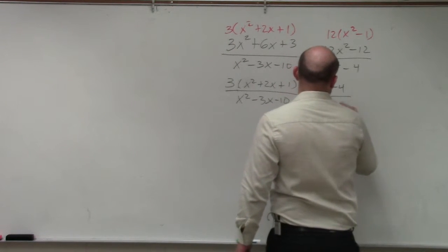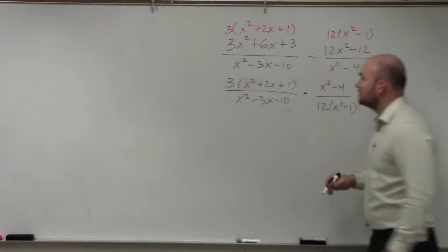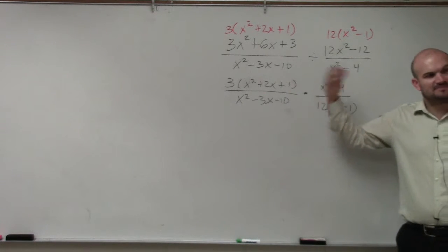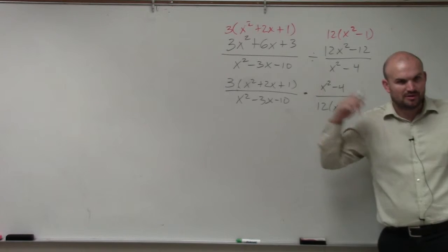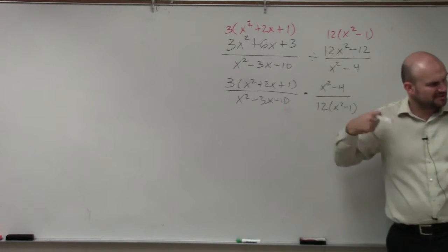4 over 12 times x squared minus 1. You multiply by the reciprocal. Dividing is basically the same thing as multiplying by the reciprocal. I just did an example of it. Same thing. It was in a different look, though.